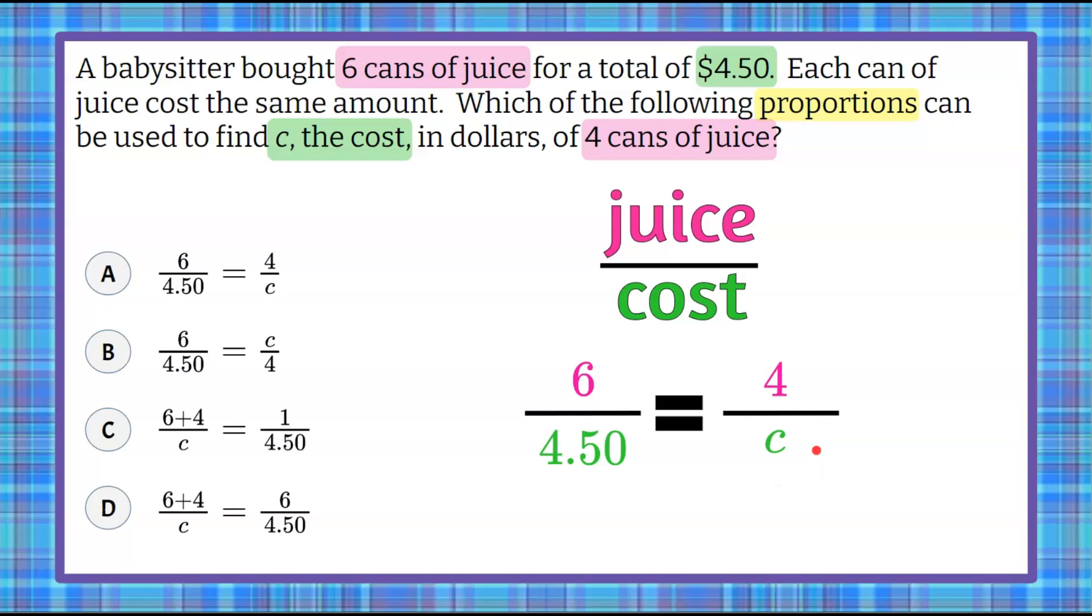But we weren't asked to solve for this problem. We were just asked to determine the correct proportion. Looking at our answer choices I can see that choice A is six cans of juice for four dollars and fifty cents is equal to four cans of juice for that unknown cost.